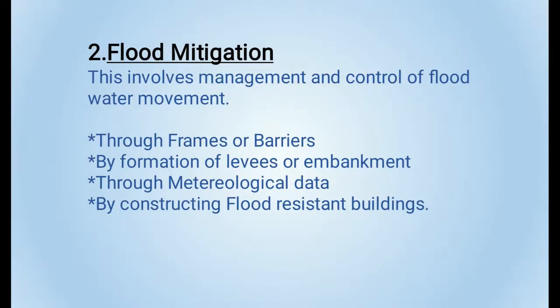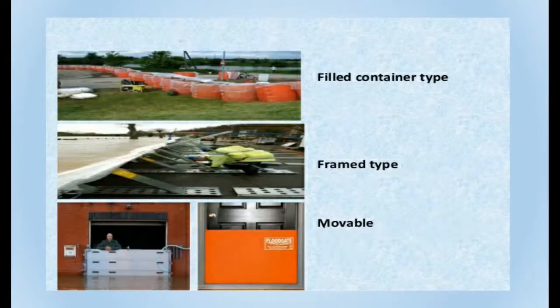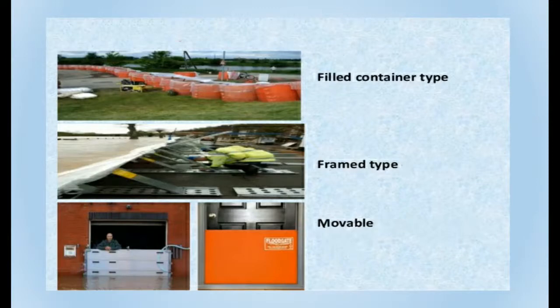Coming to the second part, that is flood mitigation — this is a technique of management and control of flood water movement. This can be done through frames or barriers, by formation of levees or embankments, through meteorological data, or by constructing flood-resistant buildings. The pictures in the slide show a few mitigation techniques: the first is a filled container type, the second is a frame type, and the last one is a movable type.